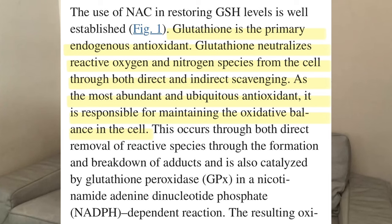As mentioned before, this is very important. Glutathione is described here as the primary endogenous antioxidant — it neutralizes reactive oxygen and nitrogen species from the cell through both direct and indirect scavenging. That's important when we talk about brain health. The researchers think that a lot of psychiatric disorders deal with inflammatory responses and oxidative species that can cause certain damages, just like we have issues with oxidative species and inflammatory processes in the rest of the body.